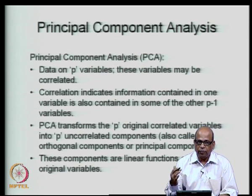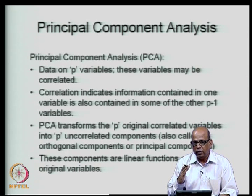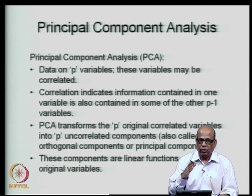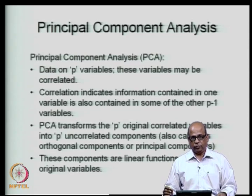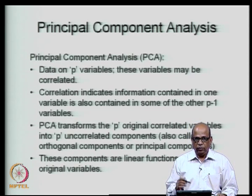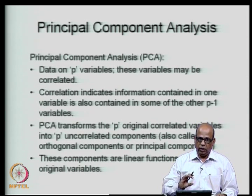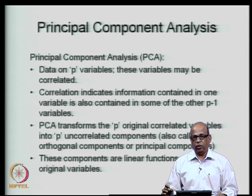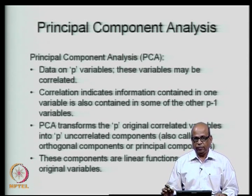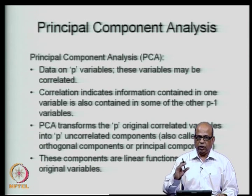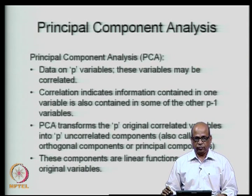Correlation means there is common information: the information contained in one variable is also contained in another, and we need to filter that out so we do not repeat information across several variables. PCA transforms the P original correlated variables into P uncorrelated components, called principal components or orthogonal components, since they are orthogonal to each other. These components are linear functions of the original variables.